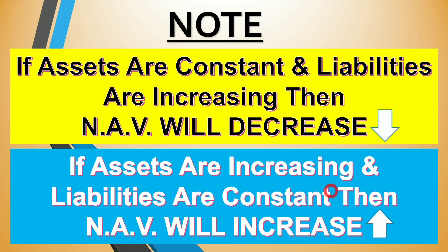Key takeaway: if assets are constant and liabilities are increasing, or assets are growing slower than liabilities, NAV will decrease — as seen when we paid salary of rupees 100 and NAV fell to rupees 9. If assets are increasing and liabilities are constant or increasing at a slow rate, NAV will increase — as seen when assets rose to rupees 1,500 with liabilities at rupees 100, giving NAV of rupees 14.